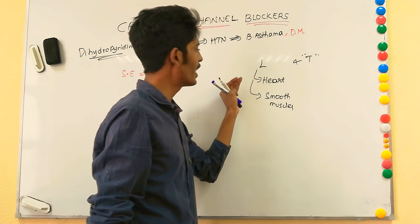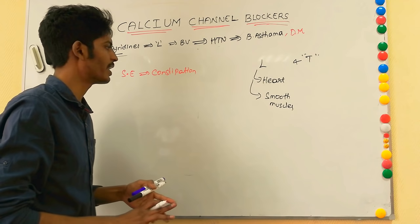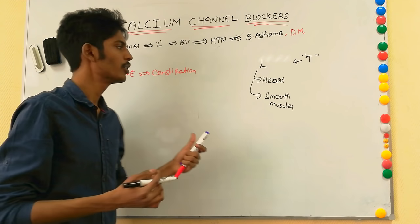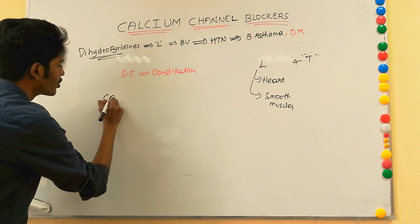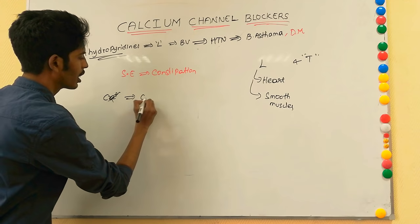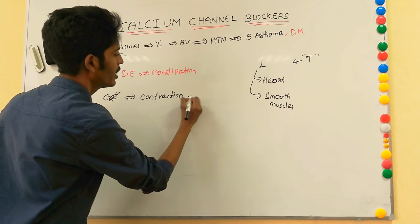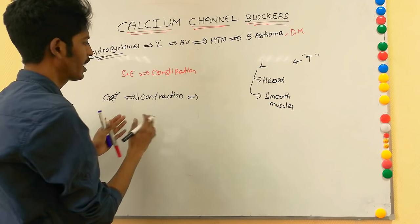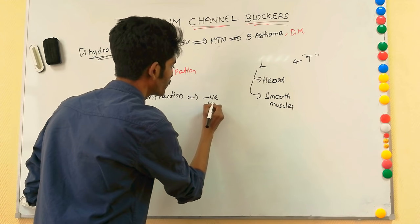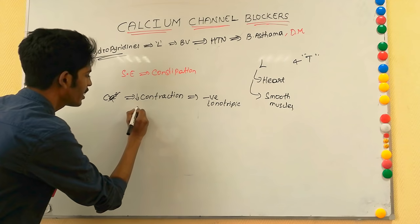Apart from dihydropyridines, the other two groups — verapamil and diltiazem — have an effect on the heart. If we block the cardiac calcium channel, there is no calcium entry into myocardial cells, so there is no contraction of the myocardium. This means they decrease contractility, producing a negative inotropic effect, and they also decrease the conduction of the heart.